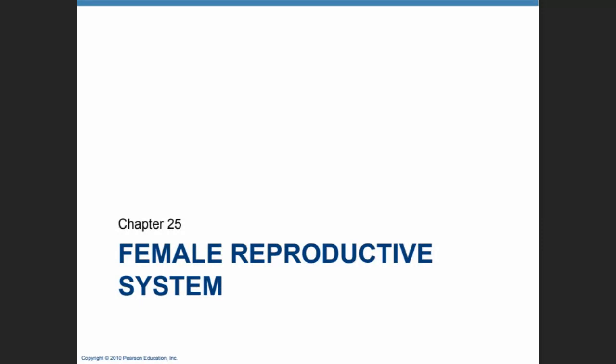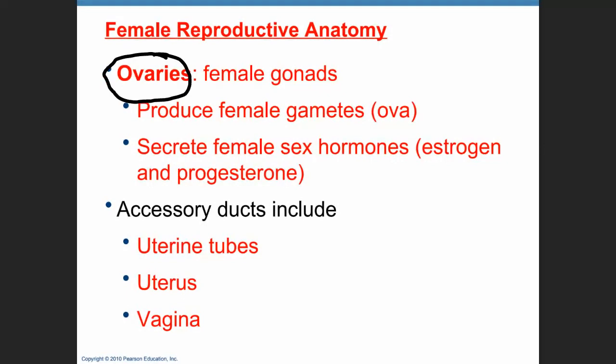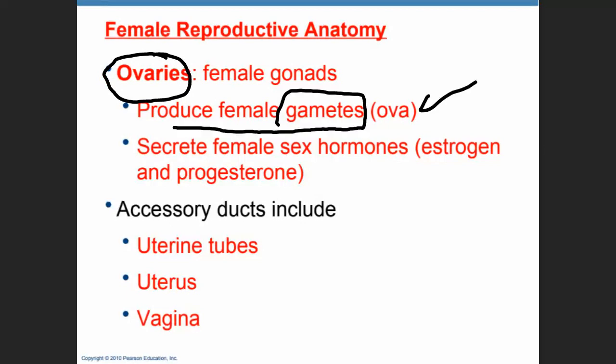This next PowerPoint picks up Chapter 25, PowerPoint B, Female Reproductive System, and it's going to focus on the anatomical structures of the female reproductive system. As we mentioned on prior PowerPoints, the gonads — the female gonads — are going to be the ovaries. This is the organ that does two things: it produces the female gamete or sex cell, which is called the ova, and secretes the female sex hormones, which are estrogen and progesterone.